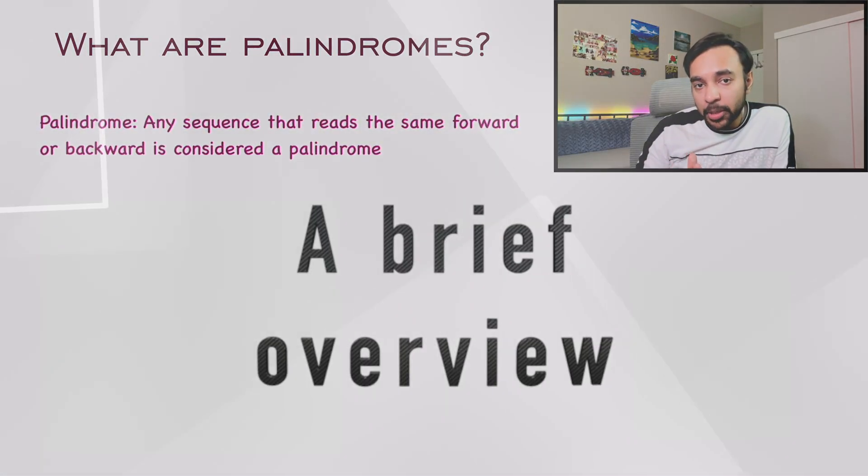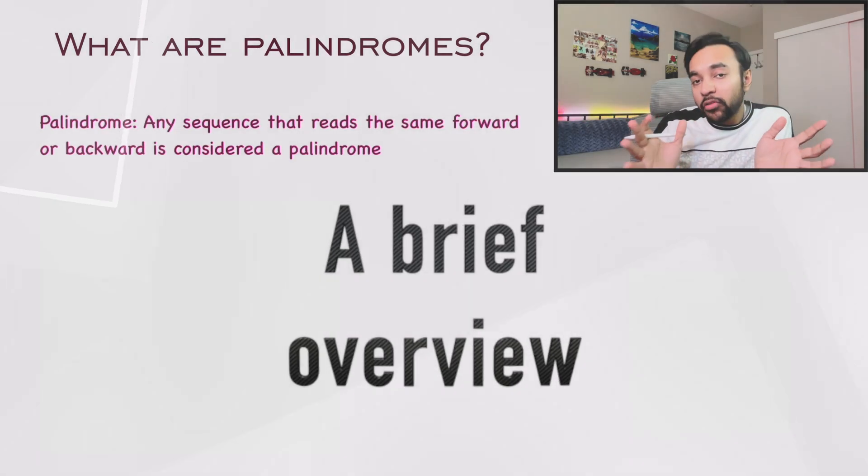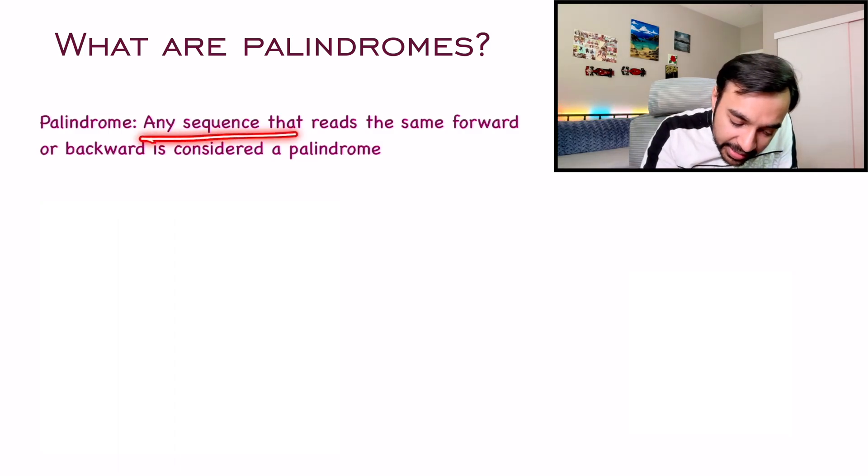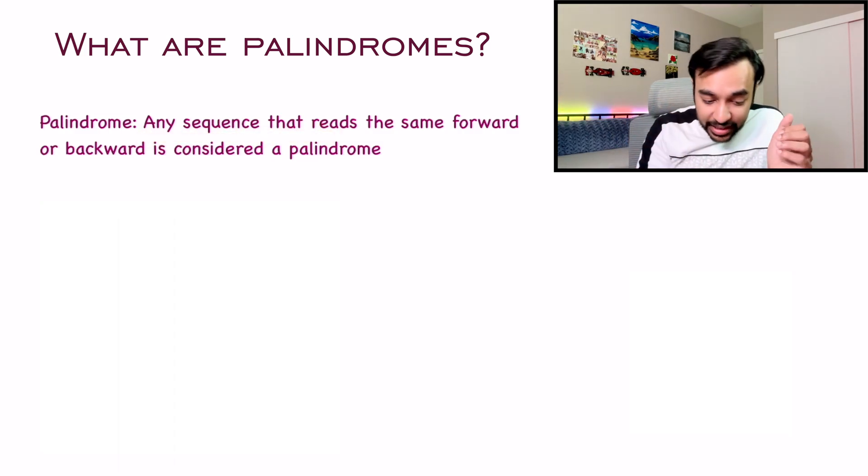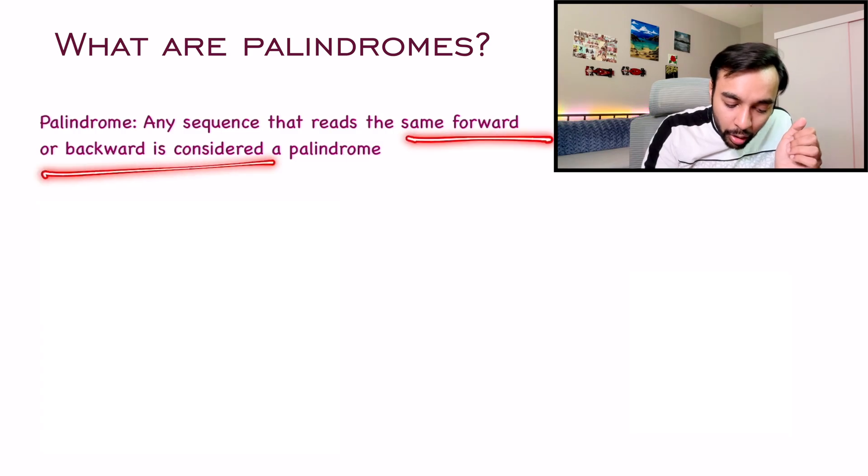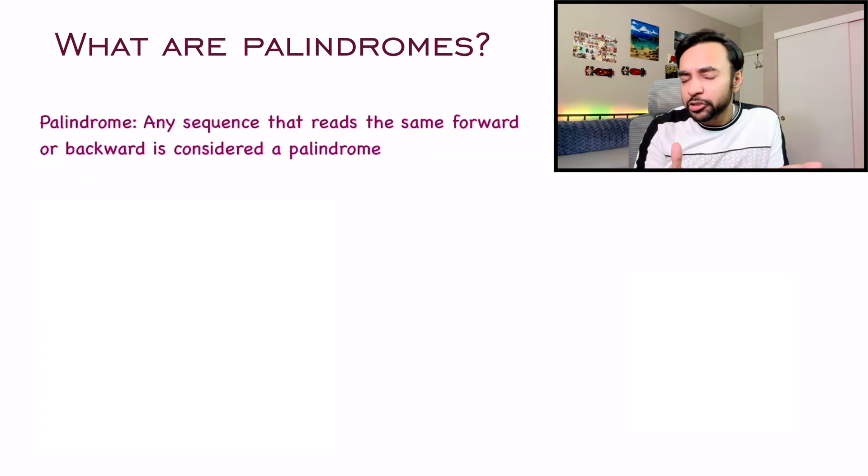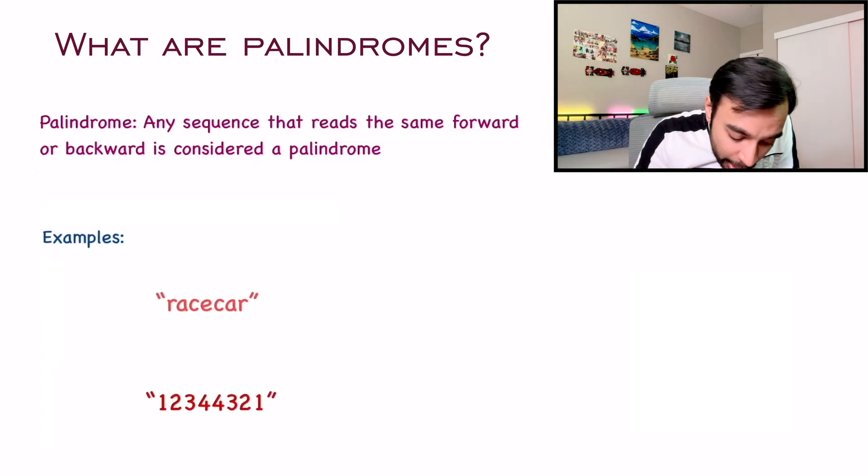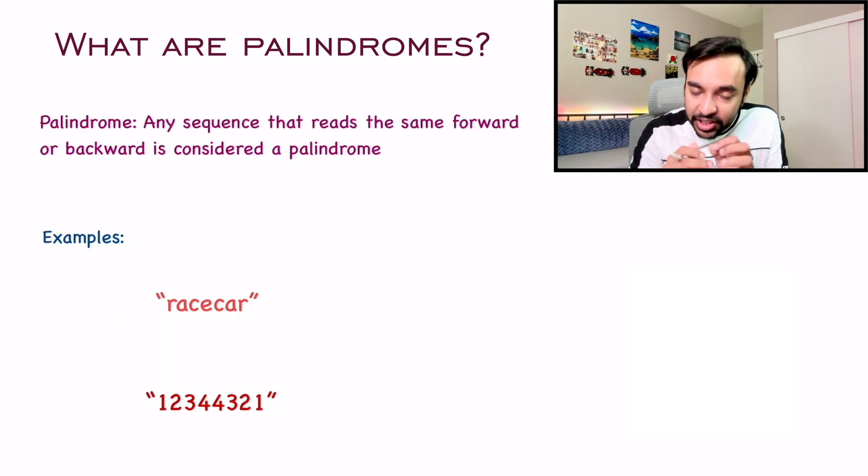First things first, let us do a quick overview of what is actually a palindrome. As you might already know, a palindrome is any sequence that will read the same if you go in the forward direction or you go in the backward direction. Looking at our first example, I have this string, racecar.